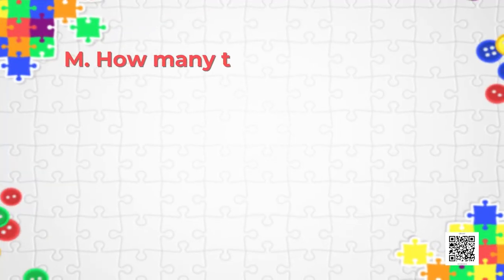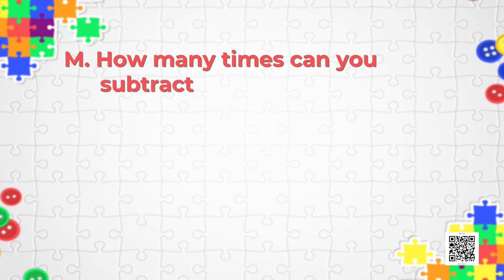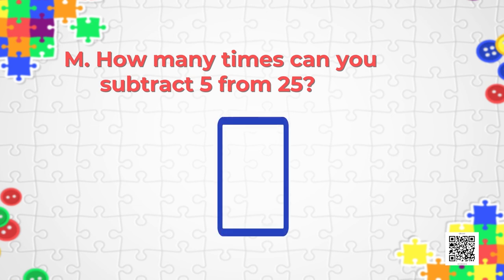Let's move on to Puzzle M: how many times can you subtract 5 from 25? Simple — you just have to subtract it. For example, if you subtract 5 once then the number you get is 20. Now try doing it yourself.